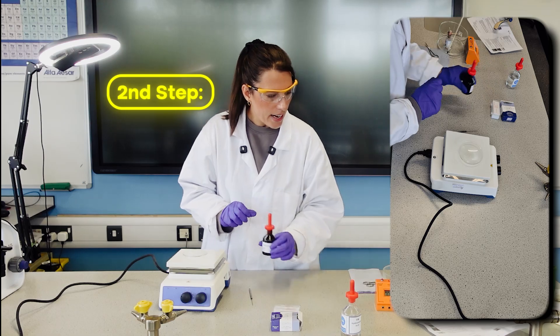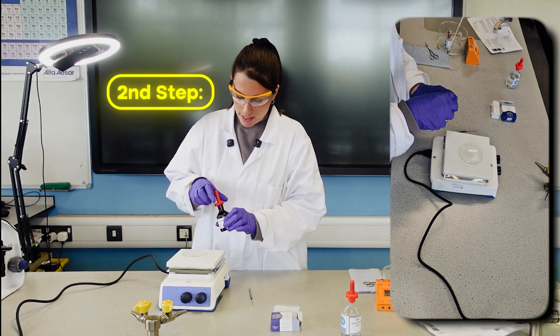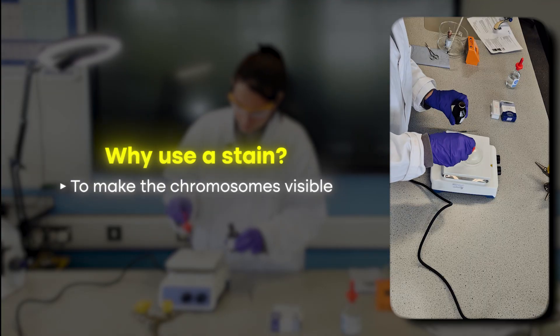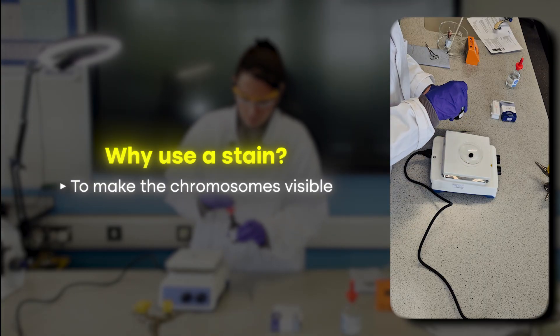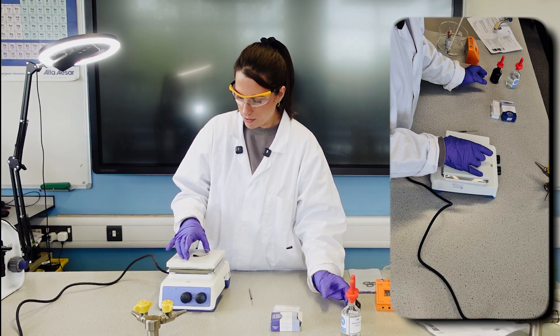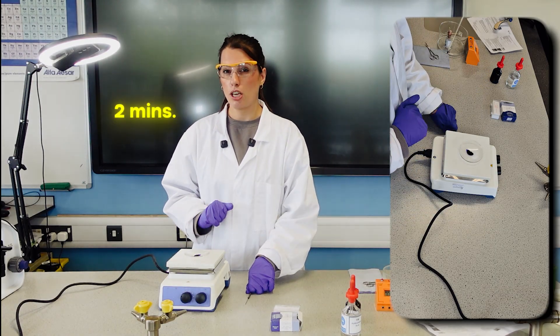The next step is I'm going to add some stain to this while it's heating as well. I'm going to leave that on the heating mantle with the root tips for about two minutes.